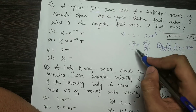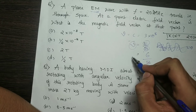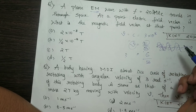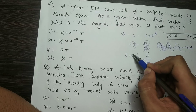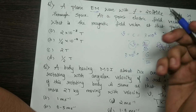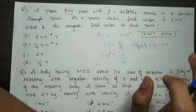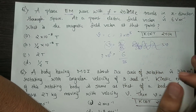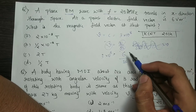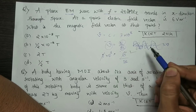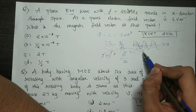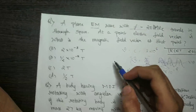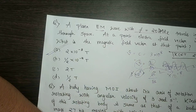Using velocity, 3 × 10⁸, and the electric field 6 V/m. Since B = E/C, the 3s cancel. So B = 2 × 10⁻⁸ T. Option is correct. Next question.